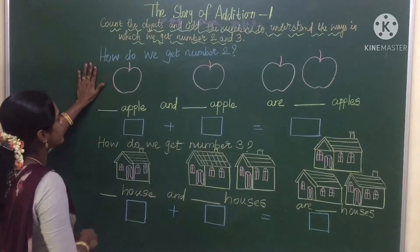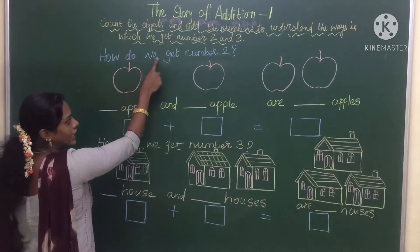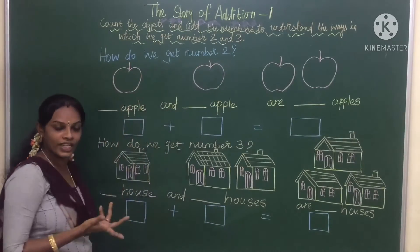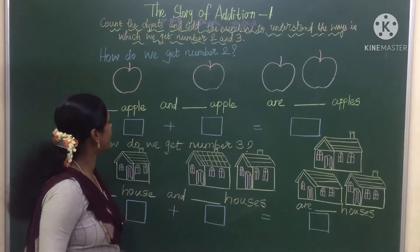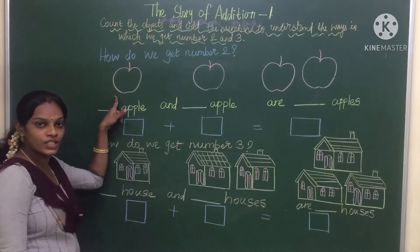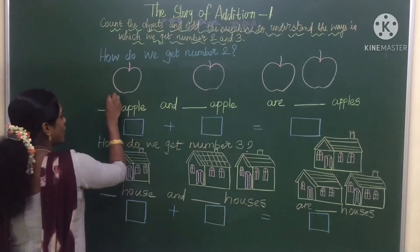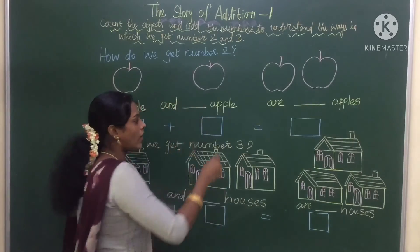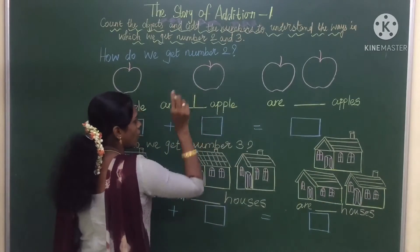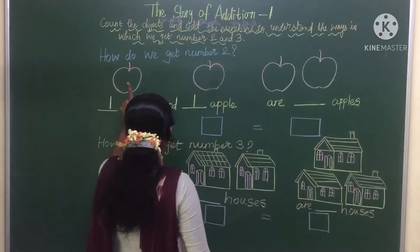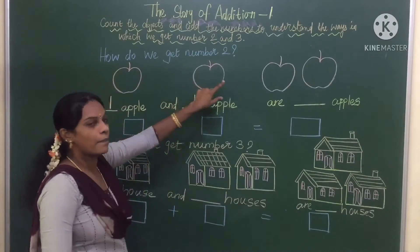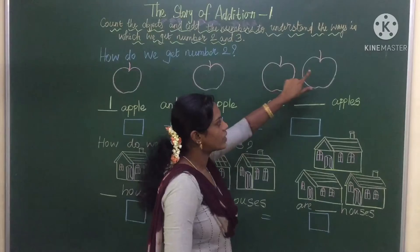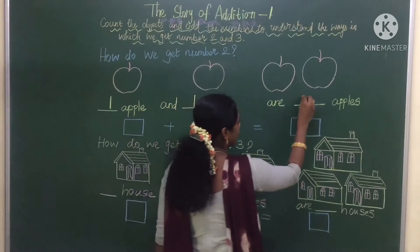Now let us solve the first one. How do we get number two? Here how many apples are there children? One apple. One apple. And here how many apples are there? Again one. So see, one and one makes how many apples? One, two. There are two apples.